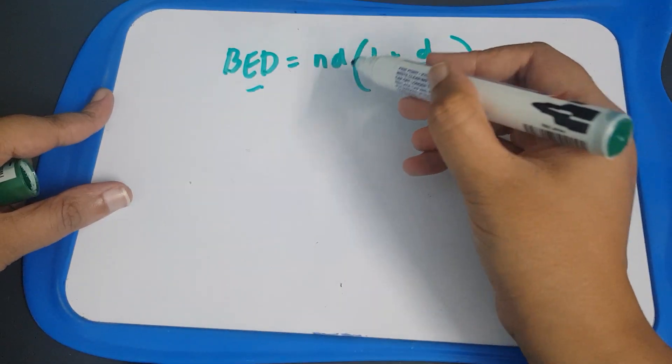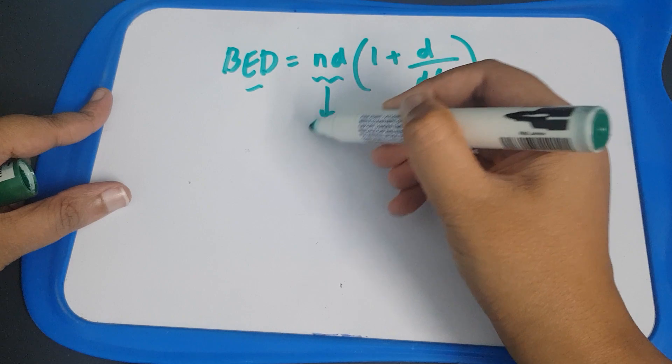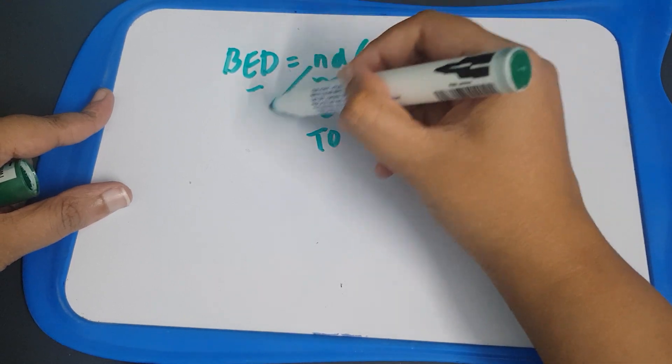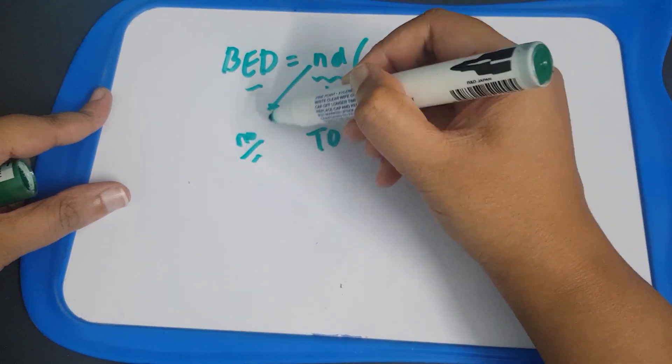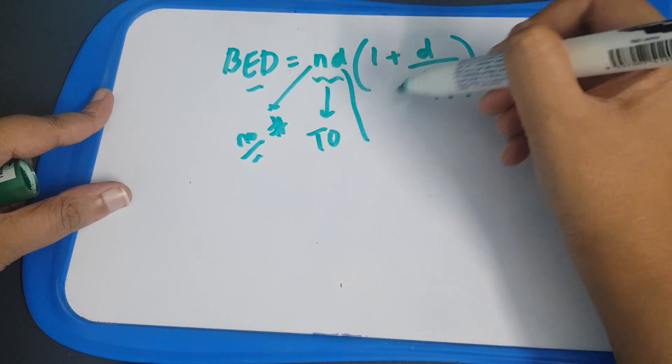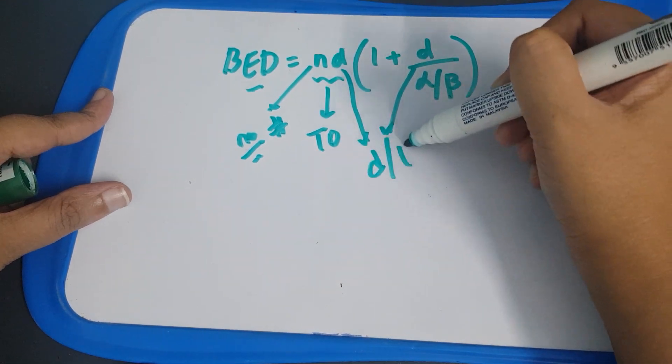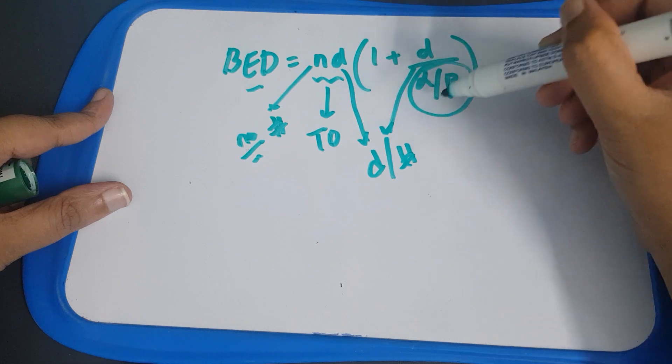BED is biological effective dose and ND is total dose in which N is the number of fractions and the small d is dose per fraction, dose per fraction and alpha by beta ratio.